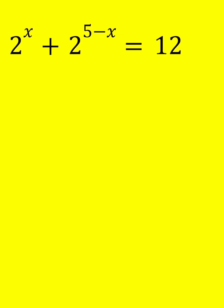Hello everyone. To solve this exponential equation, we're going to write 2 to the power 5 minus x as 2 to the 5 divided by 2 to the power x. That's equal to 12.